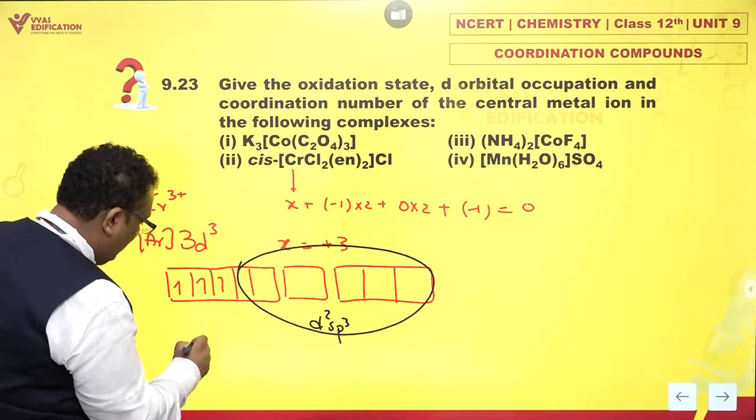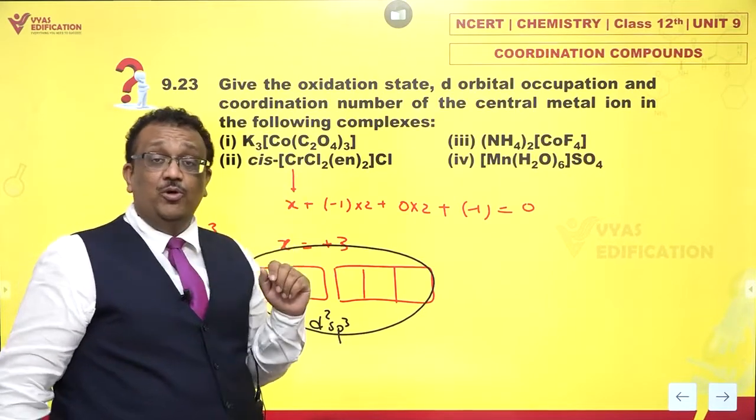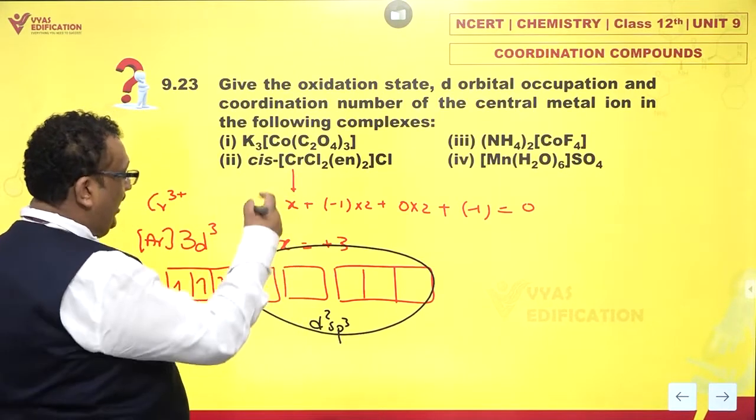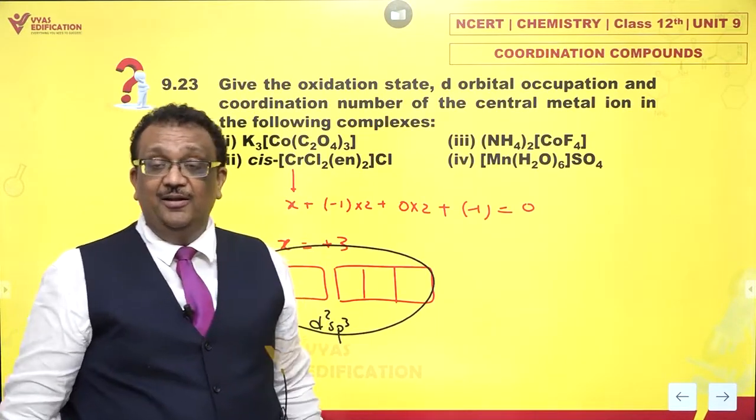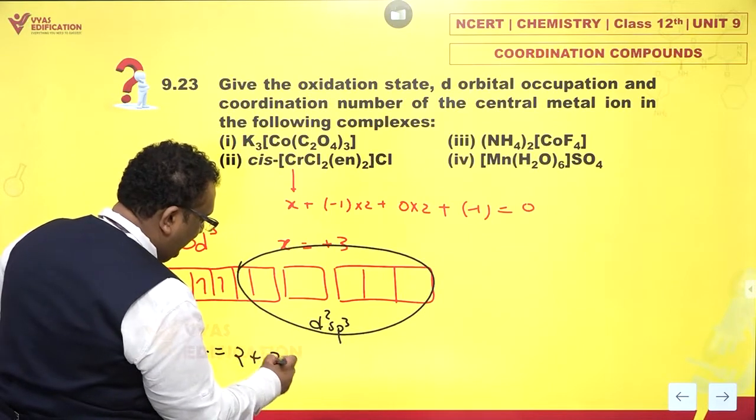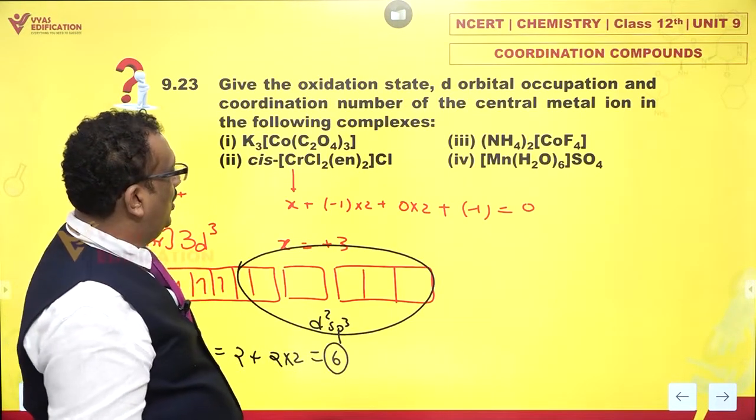Coordination number. What is coordination number? Chloride ions are monodentate ligands. So, 2 chloride ions is 2. Ethylene diamine is a bidentate ligand. So, it is 2 into 2. Total coordination number is 6.